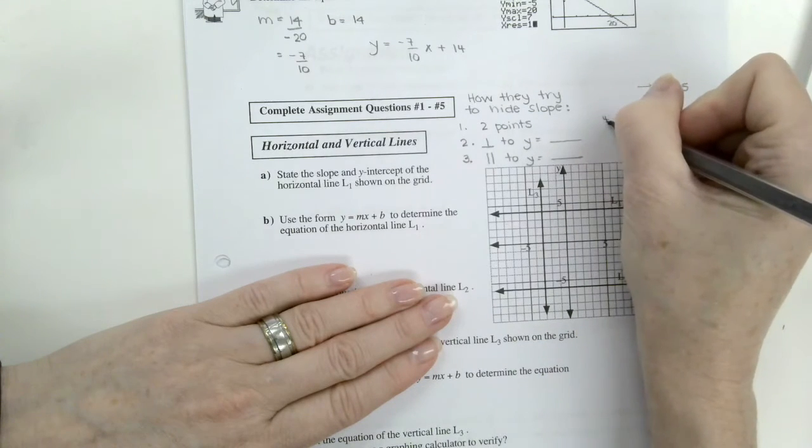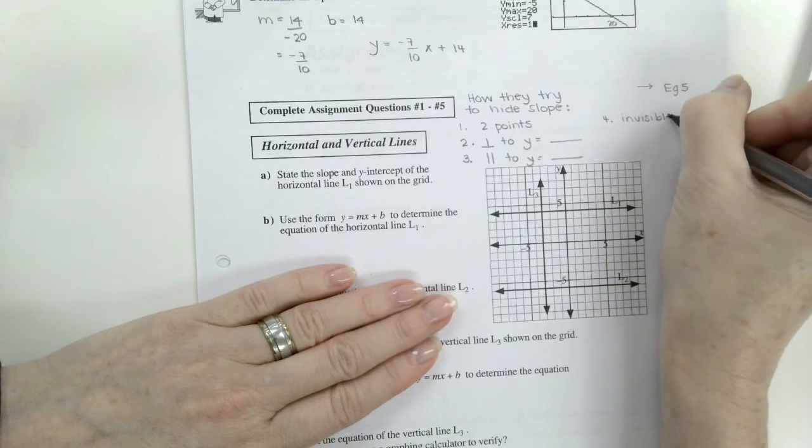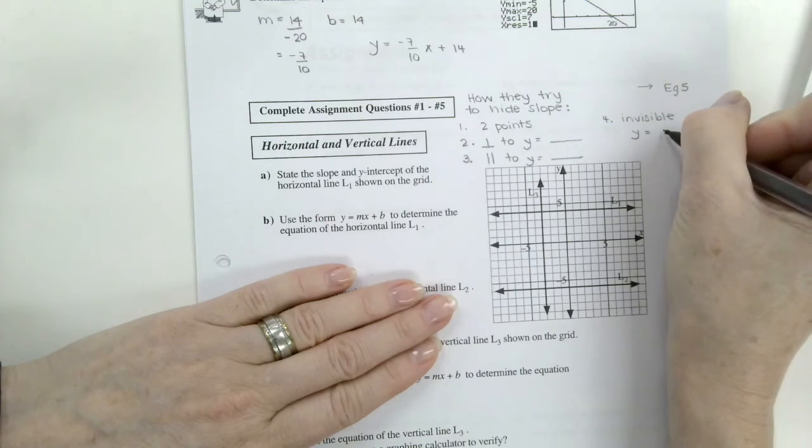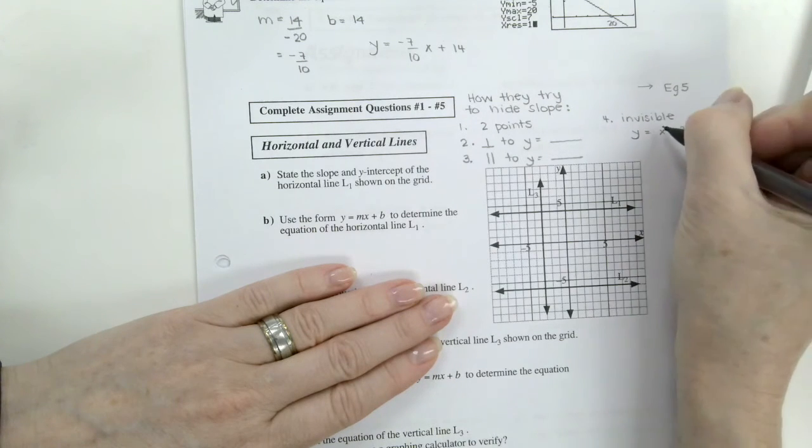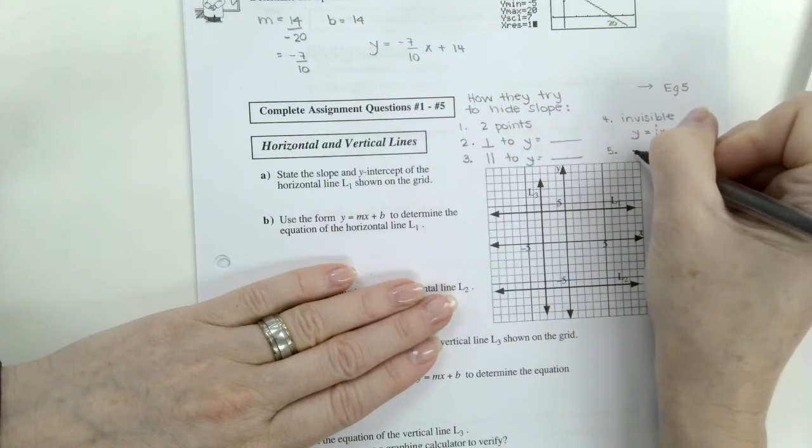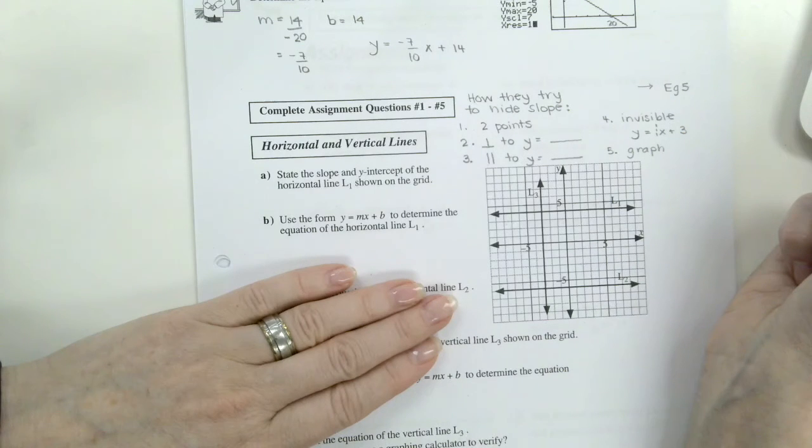Oh, they might have it be invisible as well. And I would write these down instead of just listen to me talk. So they could have y equals x plus 3. And that slope is the invisible one that's sitting in front of the x. Number five. And we've seen this. They could give you the graph. And then you find the slope using counting from the graph, usually. Or if you need to do the points and then find the slope from there, you could.